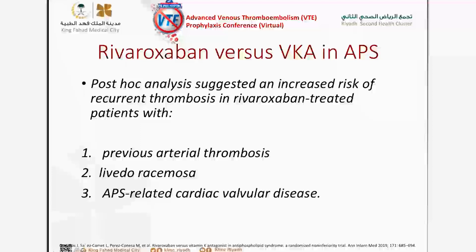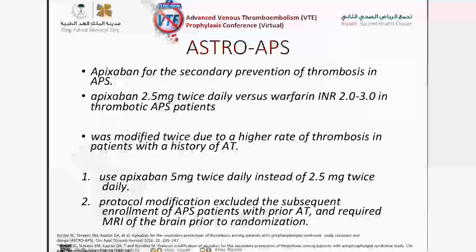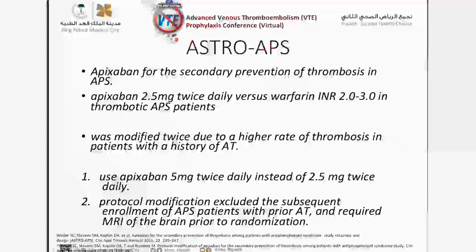Those at risk for arterial thrombosis should not be treated with rivaroxaban at this moment. What about other DOAC agents? The ASTRO-APS trial tested apixaban for secondary prevention of thrombosis in APS — using apixaban 2.5 mg twice daily versus INR 2–3 in thrombotic APS. Unfortunately, this study was modified twice: they pushed the dose up to 5 mg twice daily, and then excluded patients with prior arterial thrombosis, requiring brain MRI prior to randomization to rule out evidence of stroke.